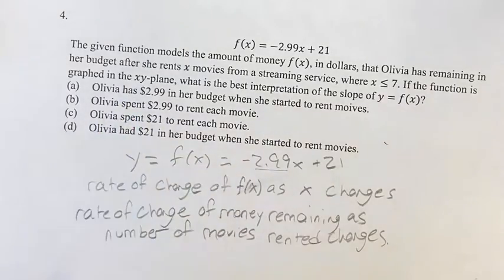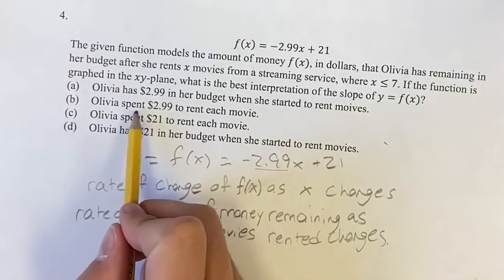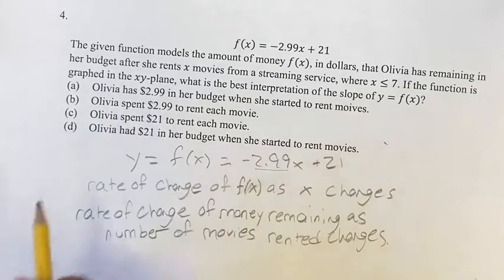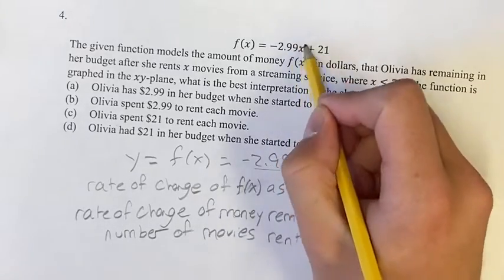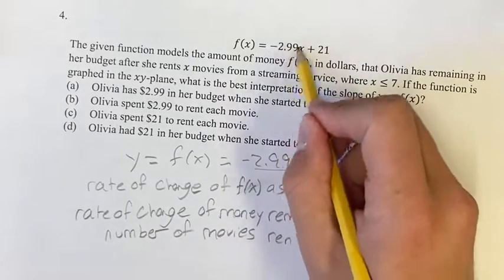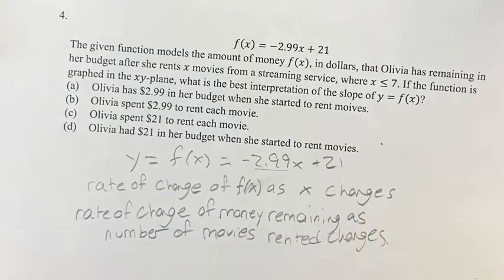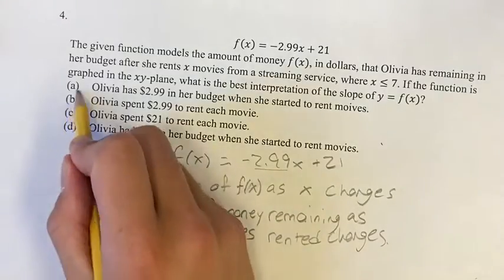So what would that correlate to in one of these answers? Well, it would be Olivia spends $2.99 to rent each movie. So every time she does, she adds one movie to this, it goes down by another $2.99 in her account that represents $2.99 for each movie, which is going to be answer B.